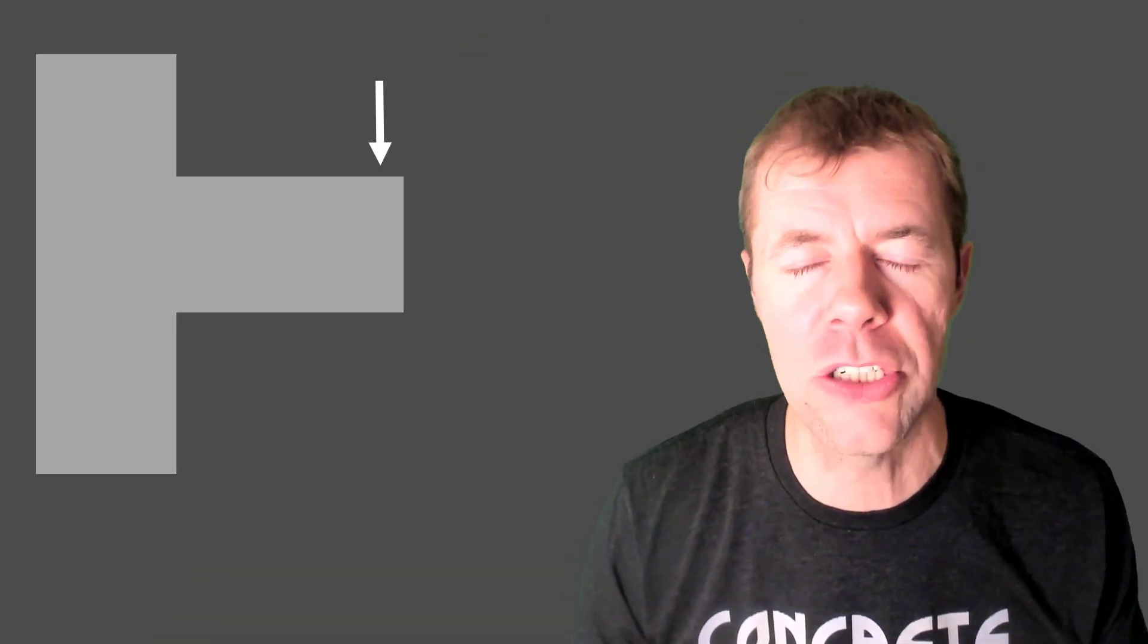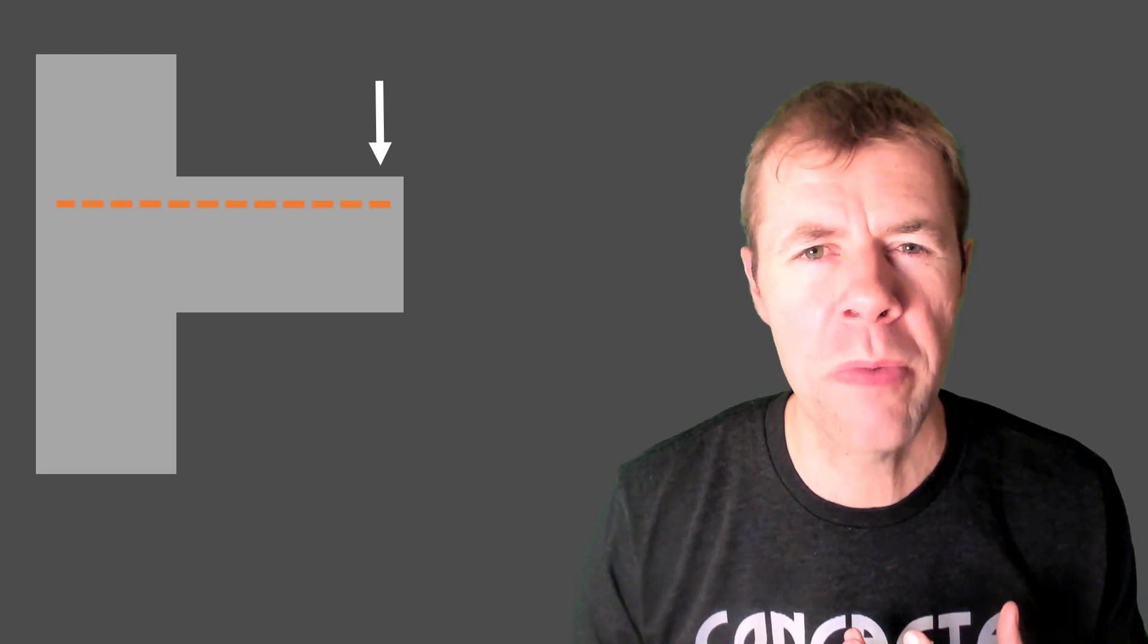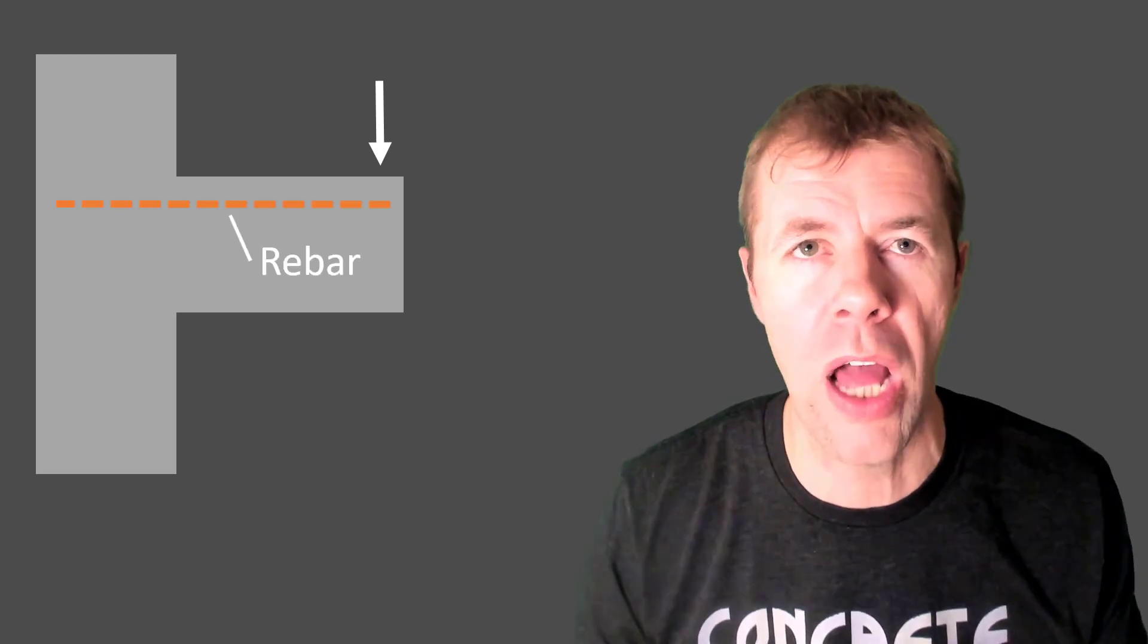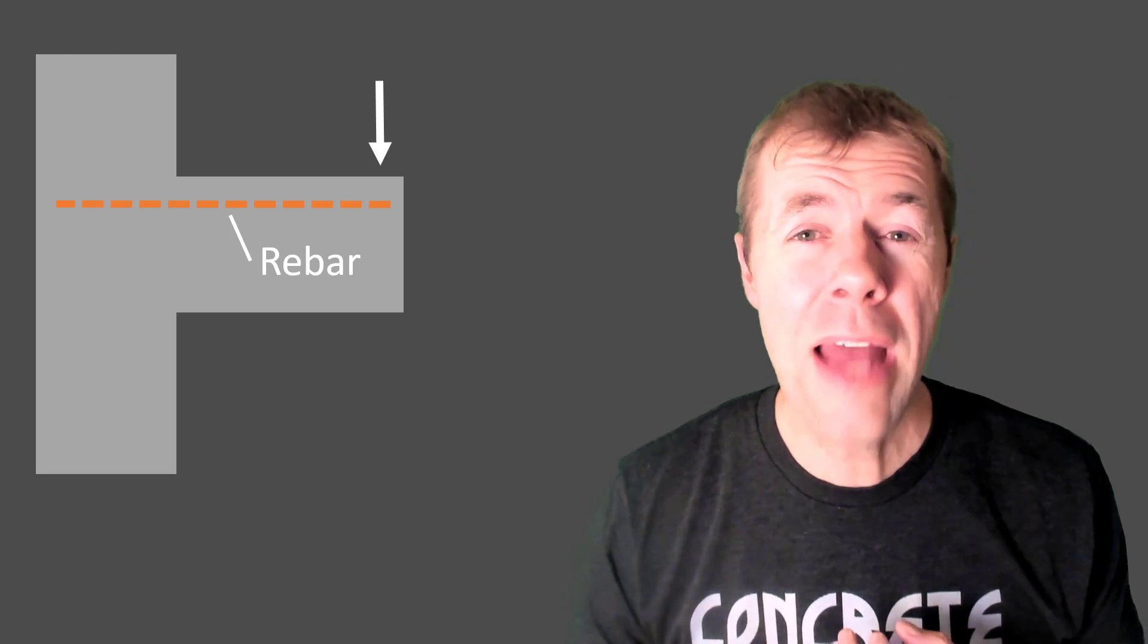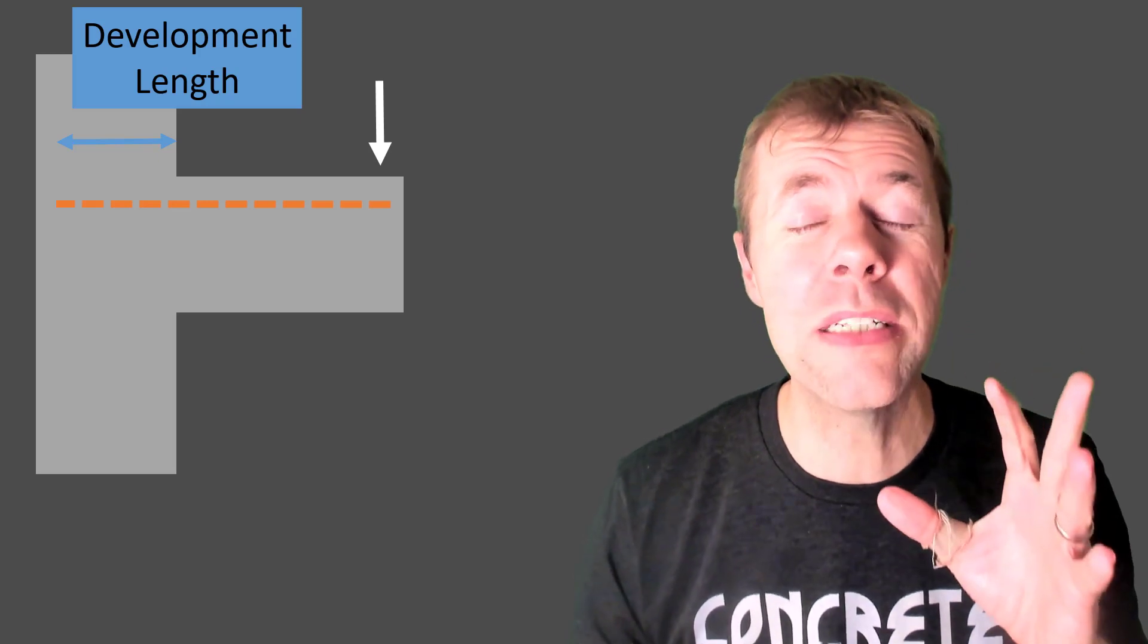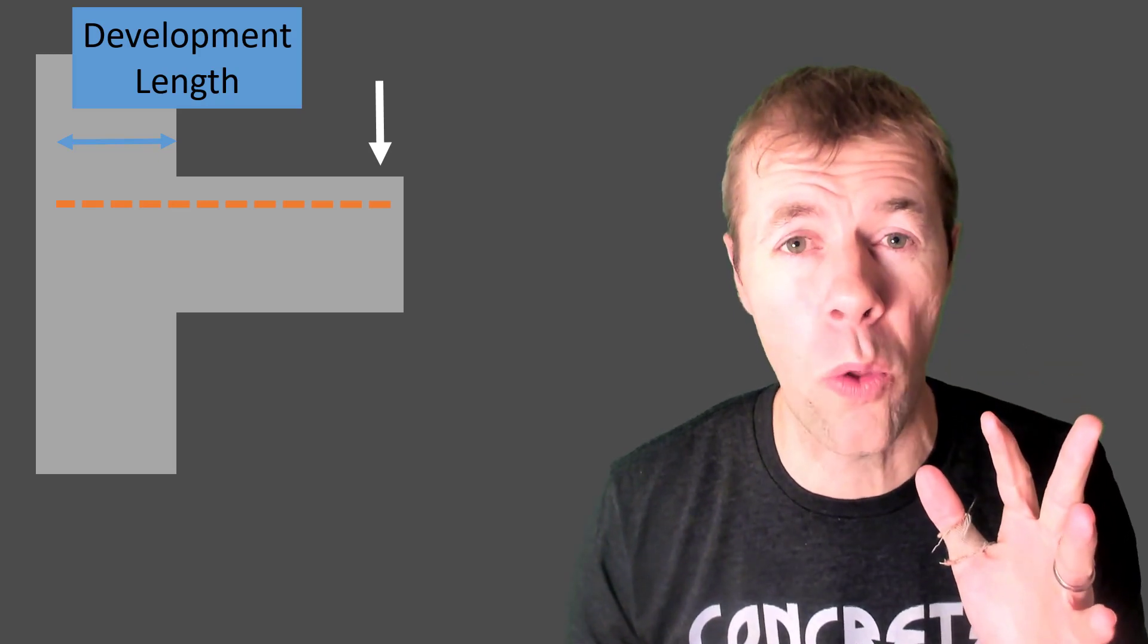If I've got a structure that looks like this and I have a load on the outside edge, now I'm going to talk about my reinforcement that's inside of it, shown by this dashed line. That's a rebar. And how far that rebar is actually embedded into that wall or into that column, that distance, that dimension is called development length. It's crazy important and that's what this video is all about.